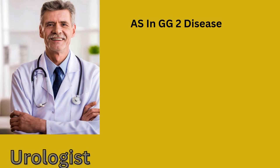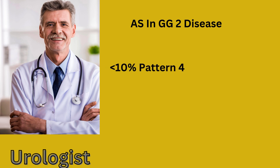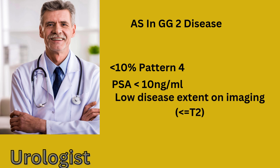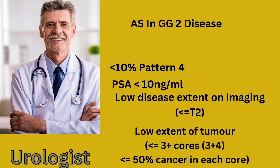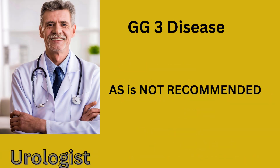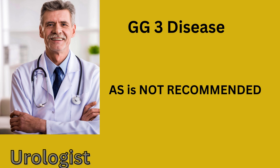Active surveillance could be offered to selected patients with grade group 2 disease — for example, if they have less than 10% pattern 4 on the Gleason grading, a PSA less than 10 nanograms per milliliter, low disease extent on imaging, and low extent of tumor in the biopsies: less than or equal to 3 positive cores with Gleason score 3+4, and less than or equal to 50% cancer involvement per core. People who go on surveillance with higher grade group accept a potential increased risk of metastatic progression. Patients with grade group 3 disease should be excluded from active surveillance protocols.